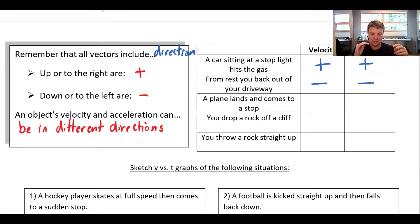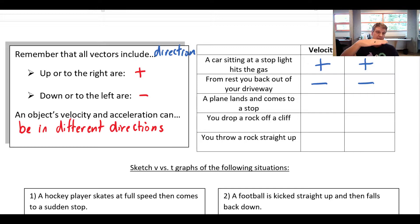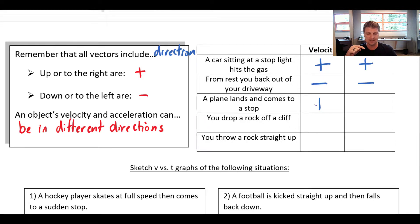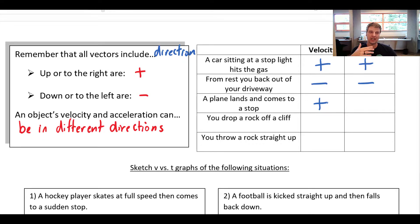A plane lands and comes to a stop: imagine a plane hitting the runway going really fast and then slowing down to a stop. It's moving forward, so velocity is positive. But it's slowing down, so its velocity is changing in the negative direction — therefore its acceleration is negative, even though it's going forward.